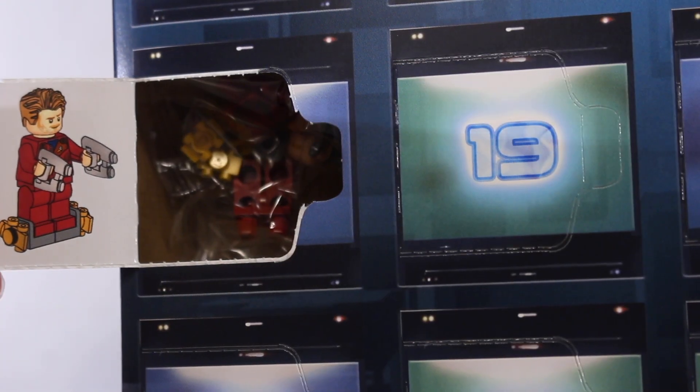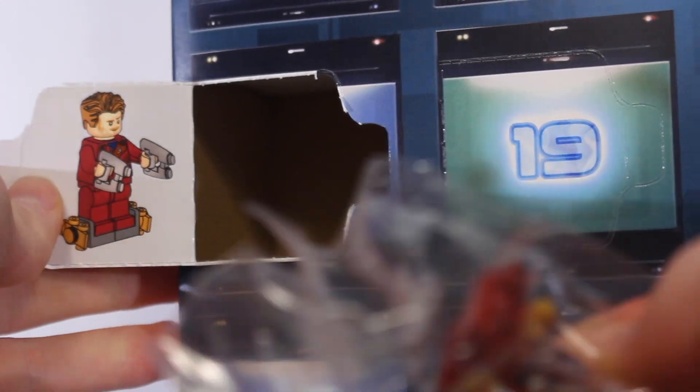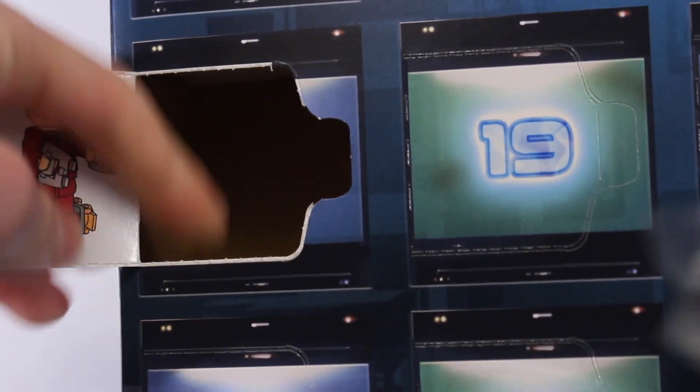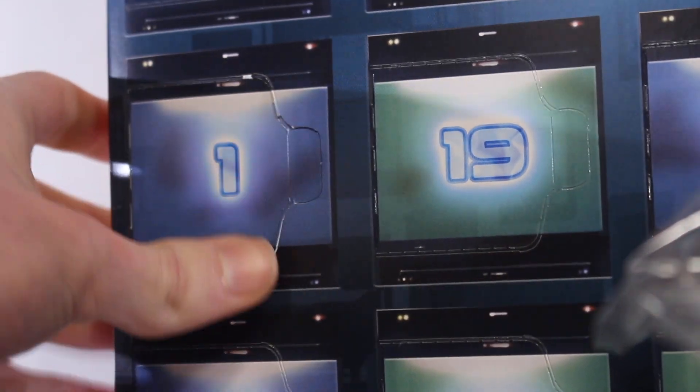In the first day of the Guardians of the Galaxy advent calendar for 2022, it looks like we have got Star-Lord. It's pretty cool that we're starting off with a minifigure here, very good minifigure to get. The inside of this looks to be all made of cardboard, which is interesting.